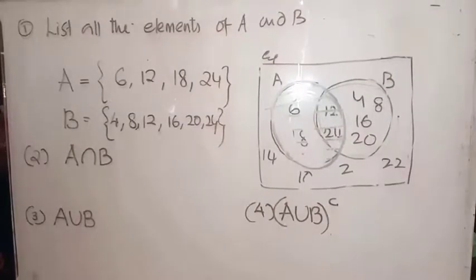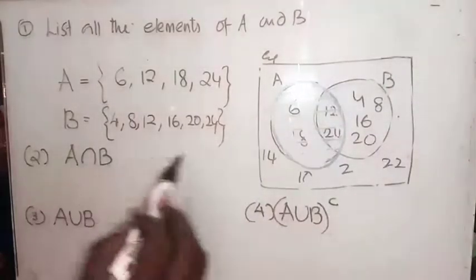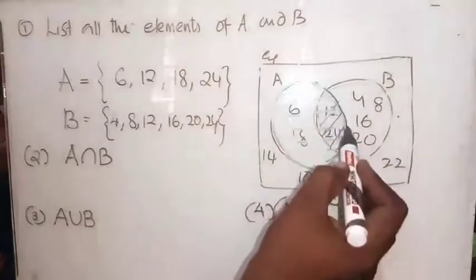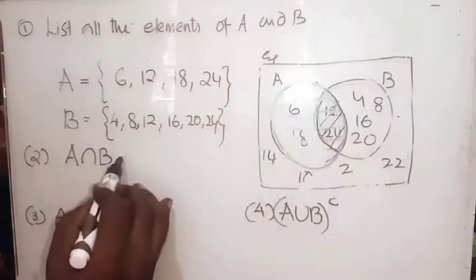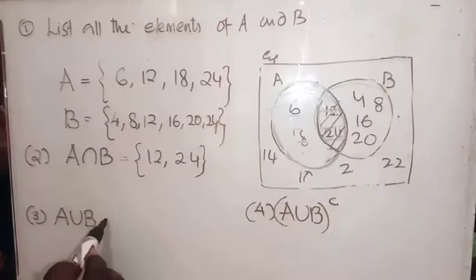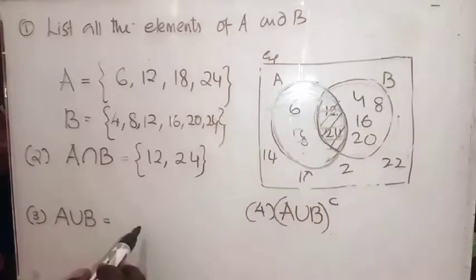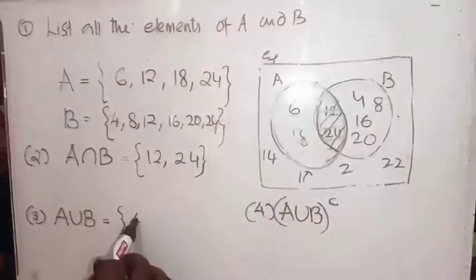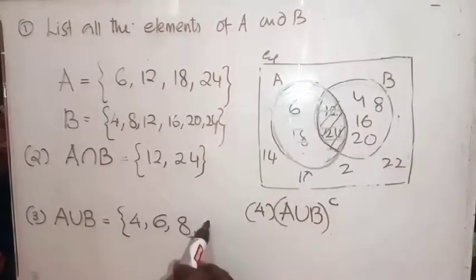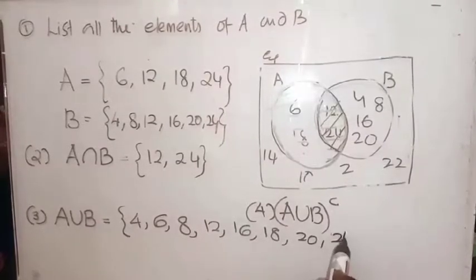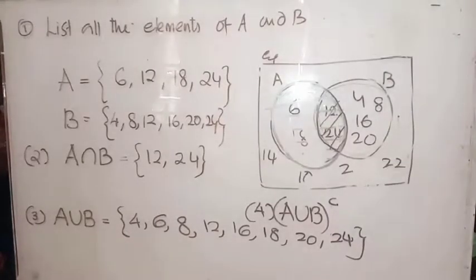The second question is A intersection B. Intersection means common elements — the common region of A and B. The elements in that region are 12 and 24, so A intersection B = {12, 24}. For A union B, we take all elements present in A and B: 4, 6, 8, 12, 16, 18, 20, and 24. Make sure no element is repeated.